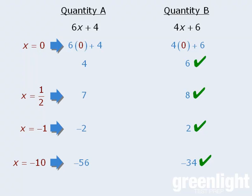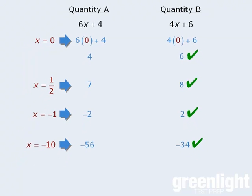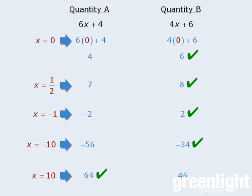At this point, we might be tempted to say that the answer is b, since it appears that quantity b will always be greater than quantity a for all values of x. Now, of course, if we plug in a value like 10, we can see that the answer is not b. If x equals 10, the two quantities evaluate to be 64 and 46, in which case quantity a is greater than quantity b. And given these contradictory results, we can now be certain that the correct answer must be d.